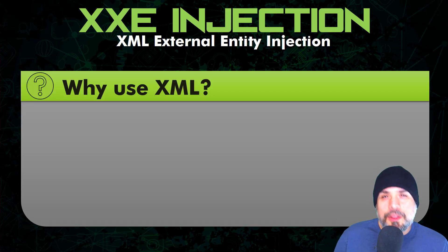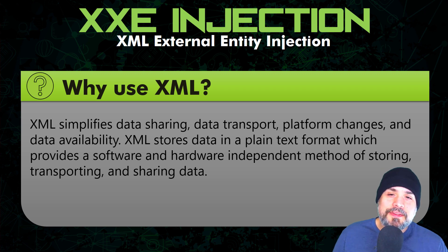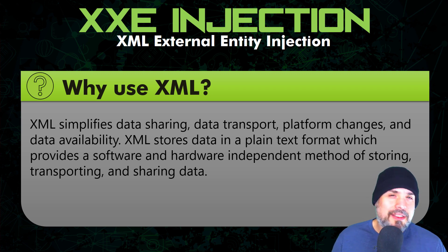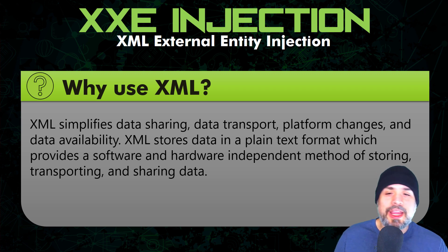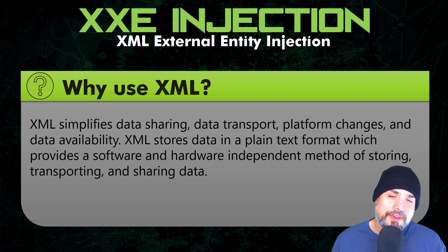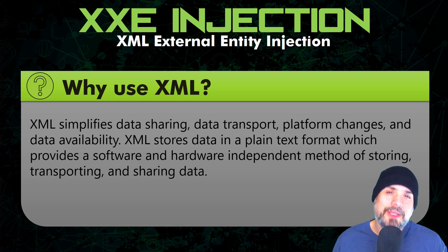So why would we use XML? XML basically simplifies data sharing, data transport, platform changes, and data availability. It stores data in plain text format, which provides a software and hardware independent method of storing, transporting, and sharing data. For example, if you had two pieces of software developed by completely different companies, XML could be a tool to facilitate the transfer of information between both systems.